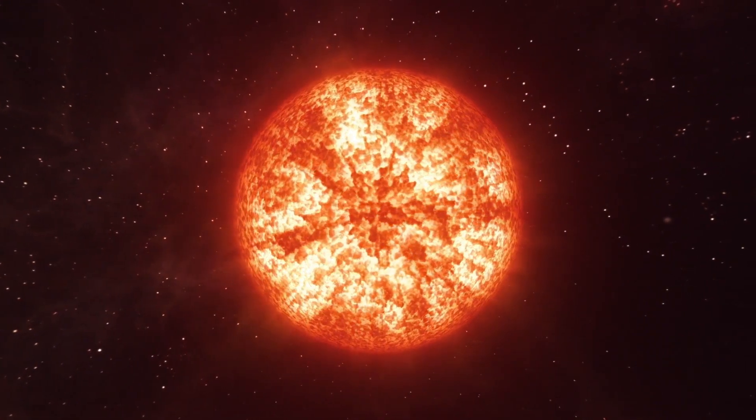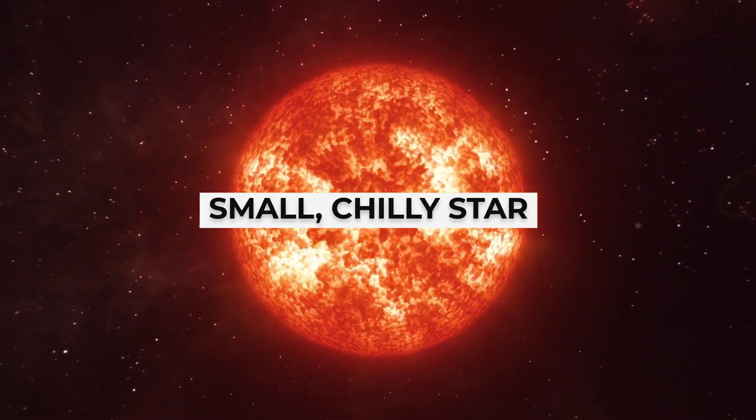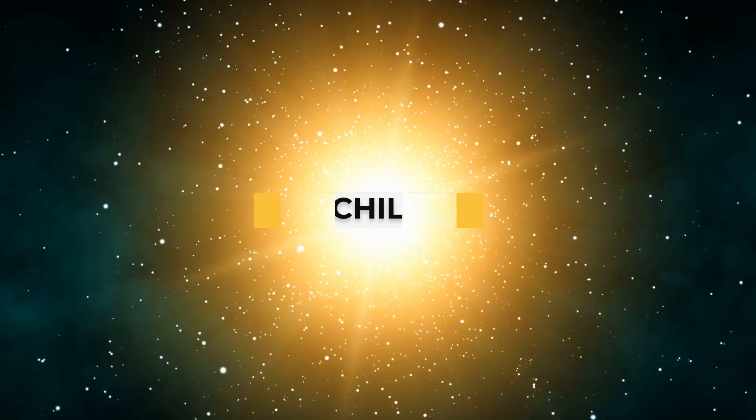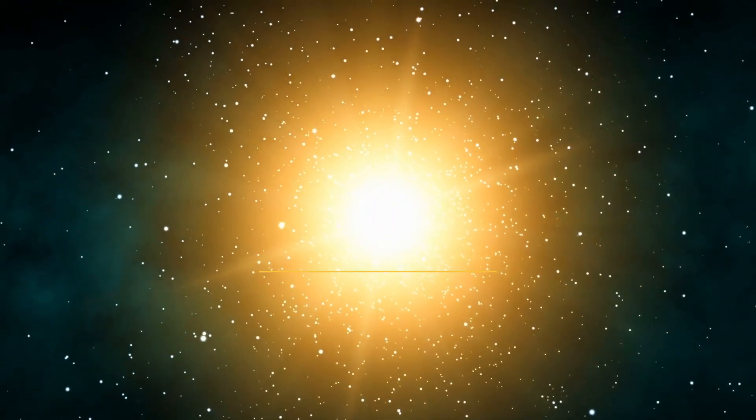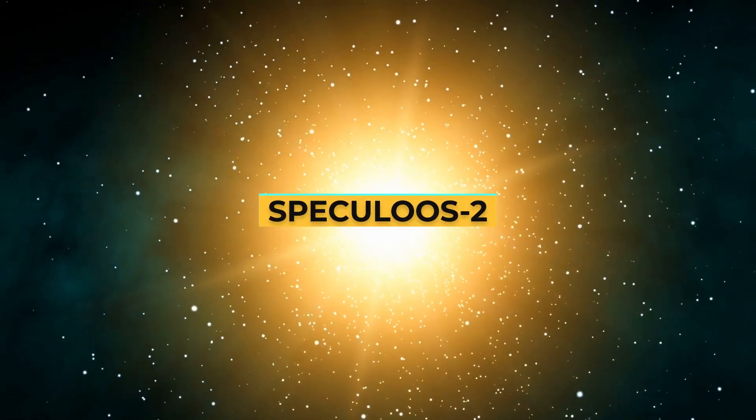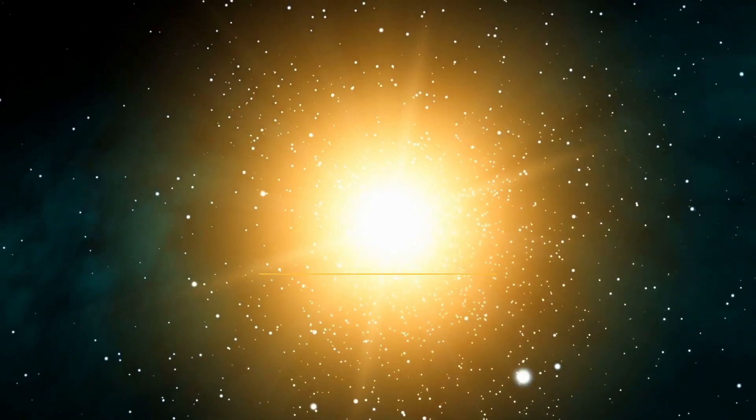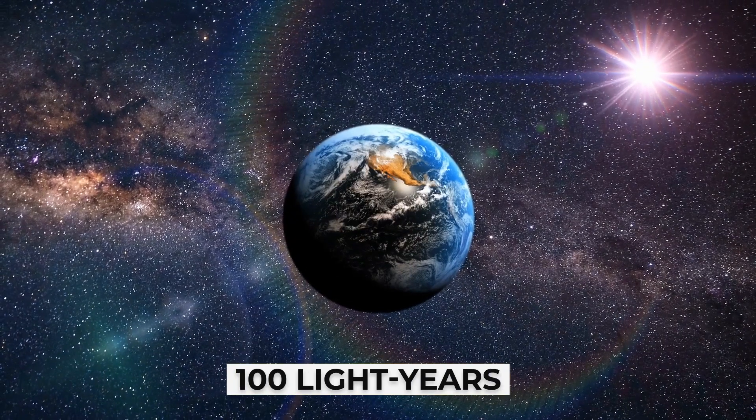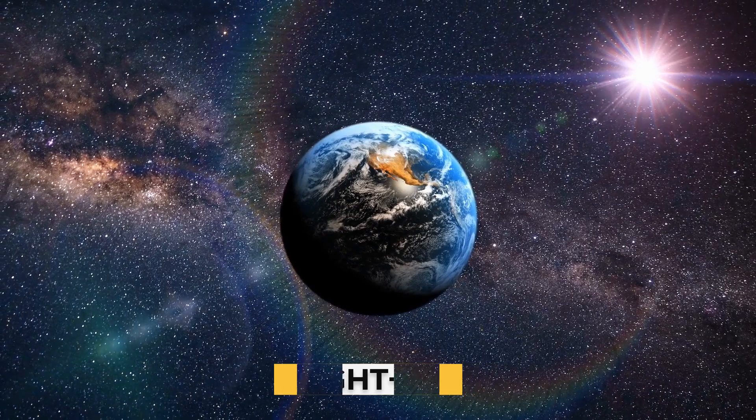LP 890-9 is a small, cool star, also known as TOI-4306, or SPECULOUS-2, in the constellation of Eridanus, which is roughly 100 light-years from Earth.